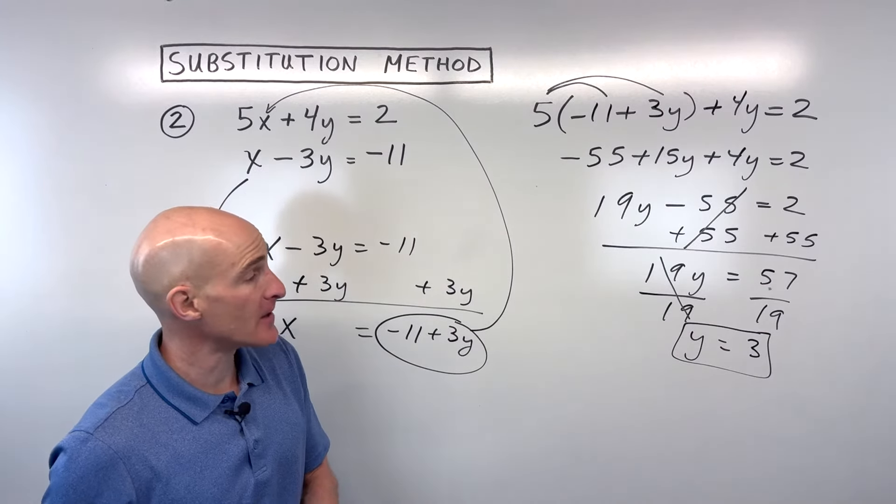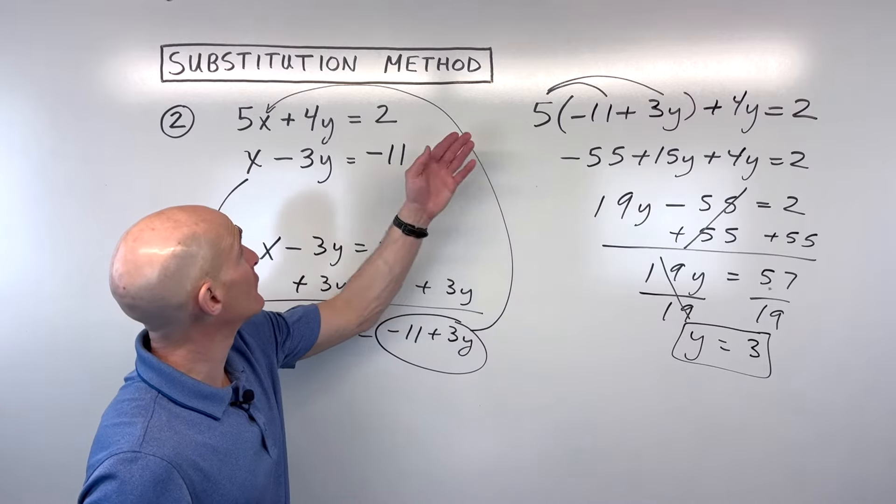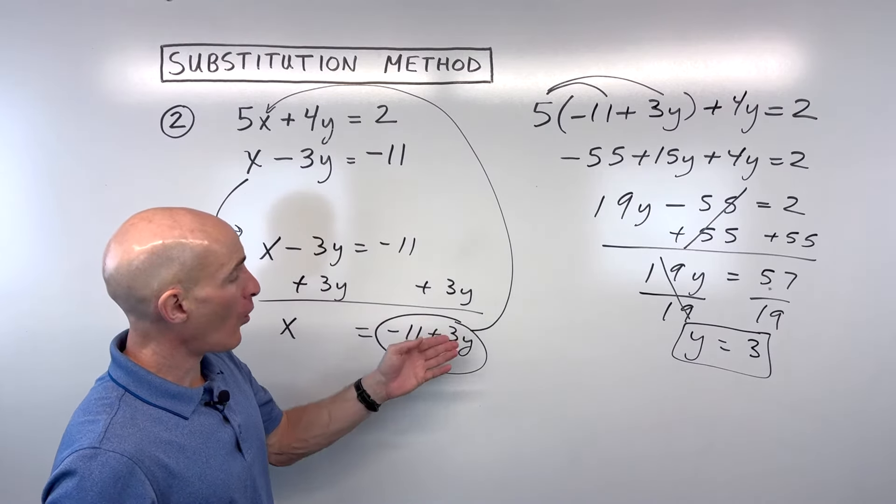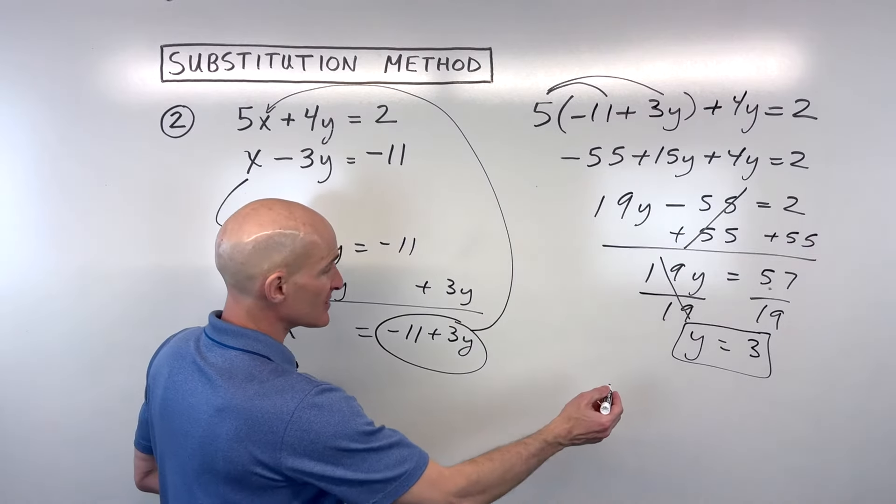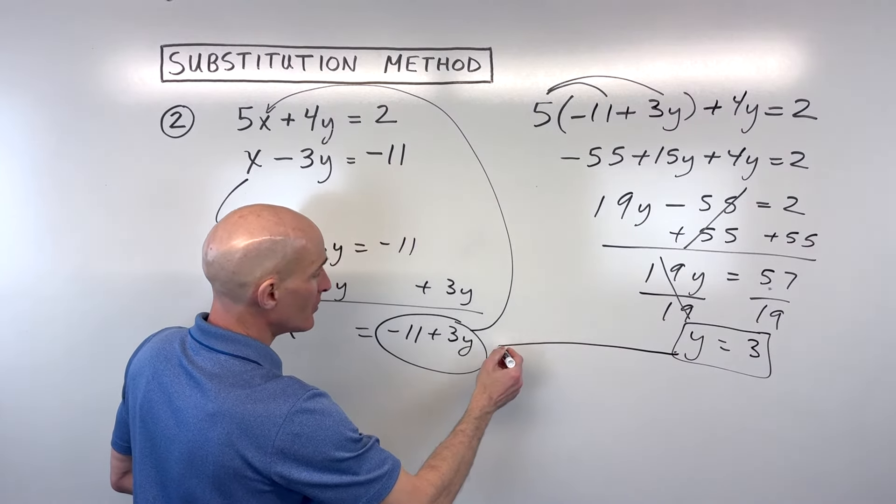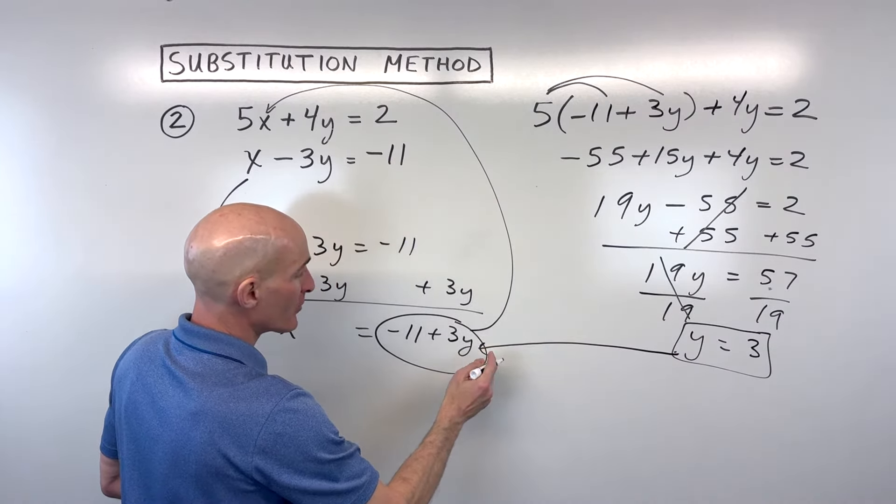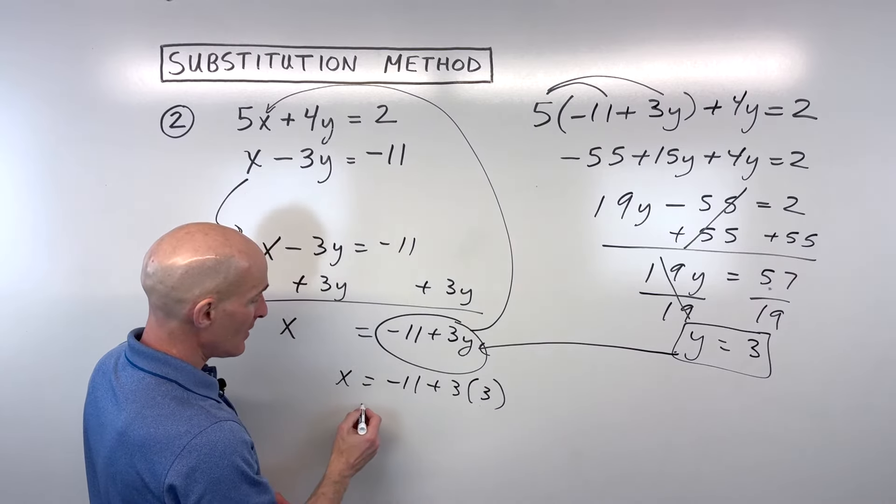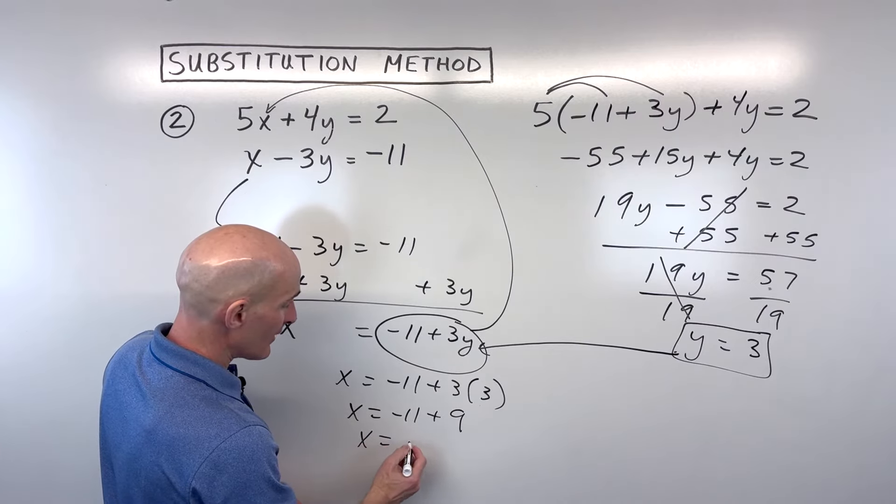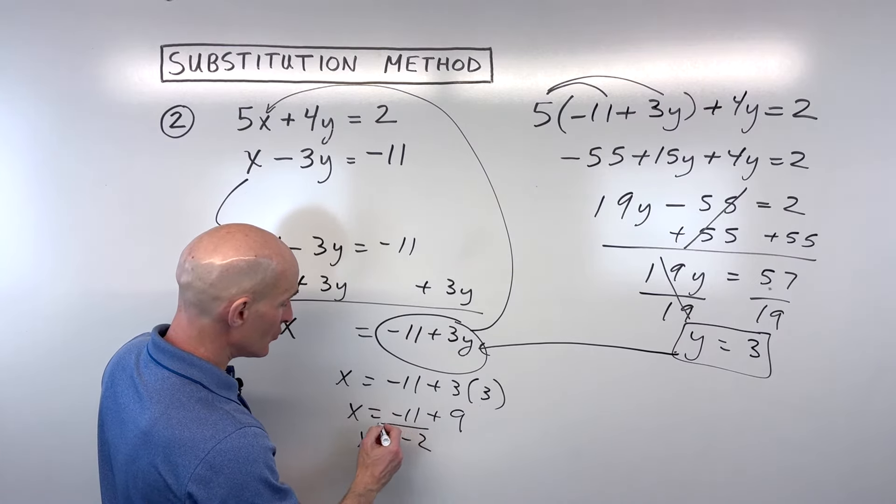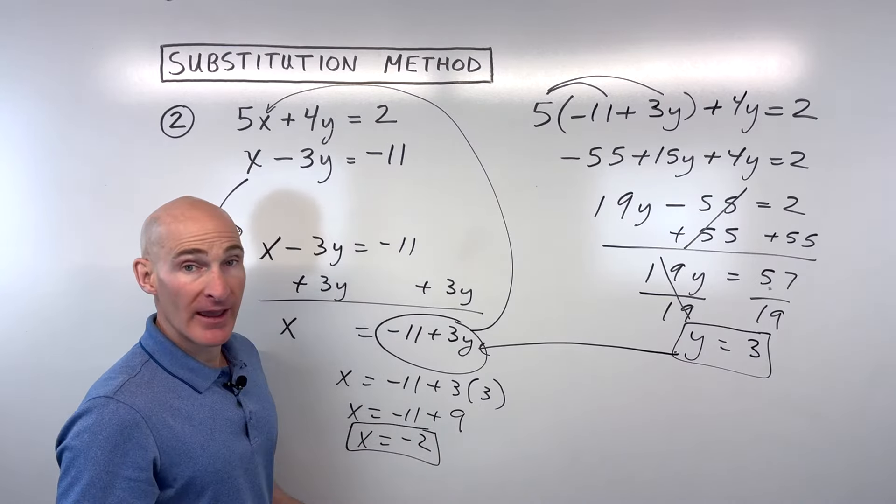How do we solve for x? Well, again, we can substitute into the first equation, the second equation, or we could use this one right here since we already have x by itself. Any one of those will get the same answer. Let's go ahead and put 3 in for y. So this is going to be x equals negative 11 plus 3 times 3. And so that comes out to negative 11 plus 3 times 3 is 9. And negative 11 plus 9 is negative 2. And so our final answer, alphabetical order x comma y, is going to be negative 2 comma 3.